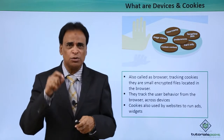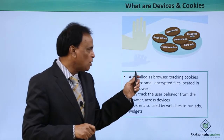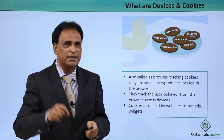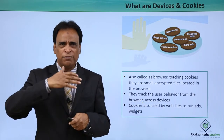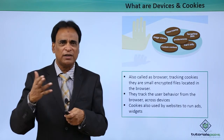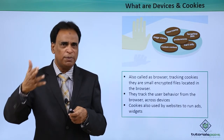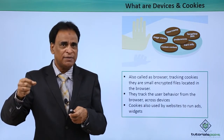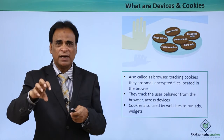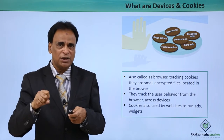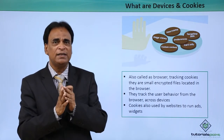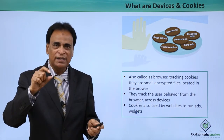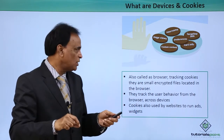What are devices and cookies? Also called browser tracking cookies, they are small encrypted files located in the browser. When you access a particular website or landing page, you open the browser and type the URL. Once typed, the browser directory picks up the URL and stores it as an encrypted file on your system.